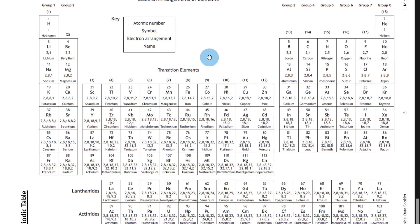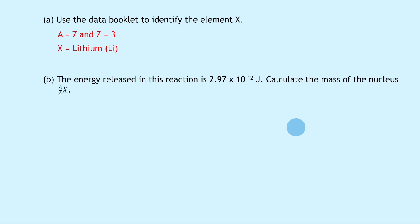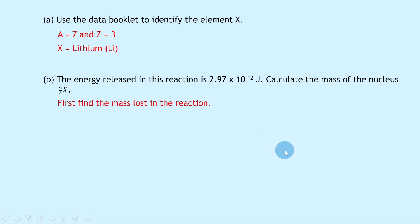With A = 7 and Z = 3, consulting the periodic table in the data booklet shows atomic number 3 is lithium (Li). So element X is lithium. For part b, the energy released in this reaction is 2.97×10⁻¹² joules — we need to calculate the mass of nucleus X (Li-7-3). The first step is to find the mass lost using E = mc².